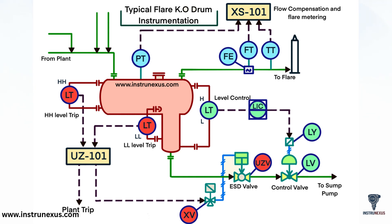In this diagram, we're looking at the typical instrumentation for a flare knockout drum, also known as a KO drum — a vital part of every flare system. The primary purpose of this vessel is to separate liquids from the gas stream before the gas is sent to the flare. This ensures only clean gas is burned, while condensed liquids are drained safely to a sump system.